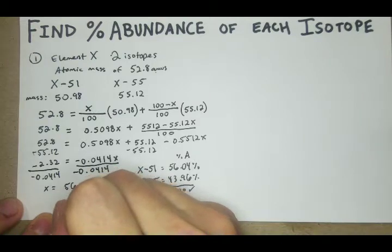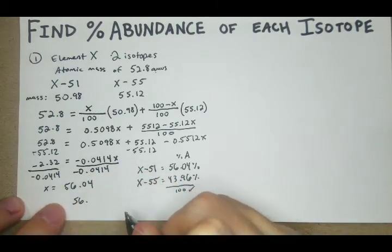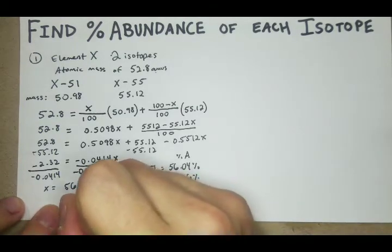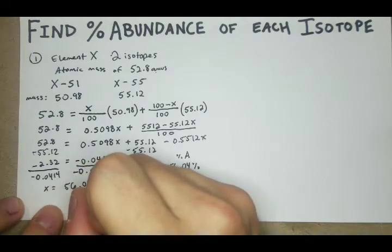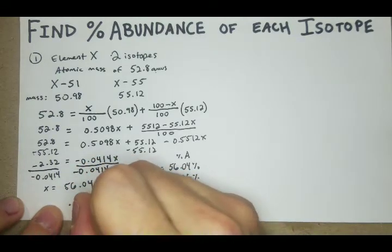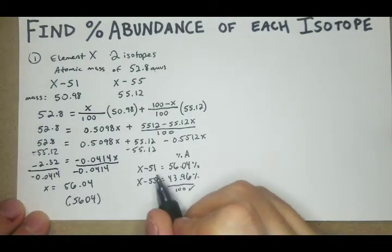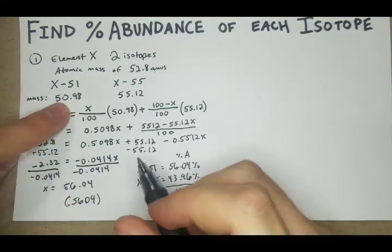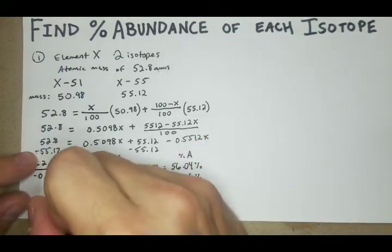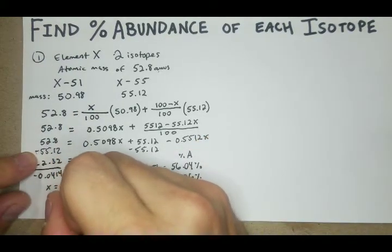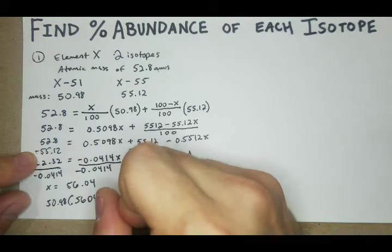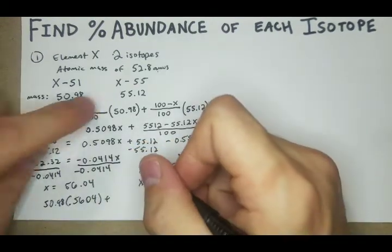We're going to take 56.04, multiply the percentage by the mass, which our mass of the lower isotope is 50.98.